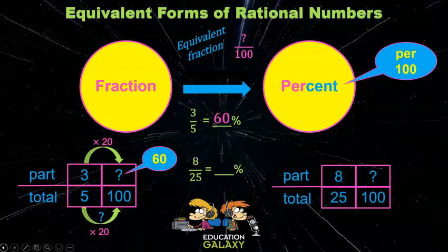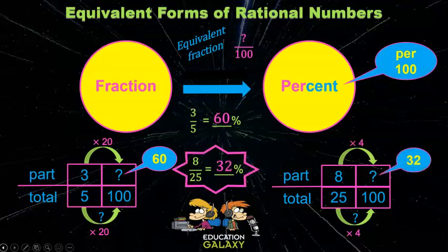Oh, that's easy! And on eight over twenty-five, I would say twenty-five times four is a hundred, and eight times four is thirty-two, so it's thirty-two percent.